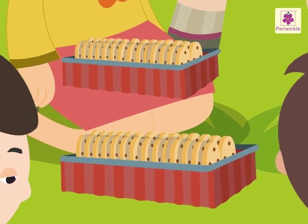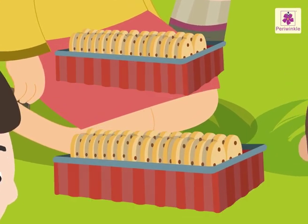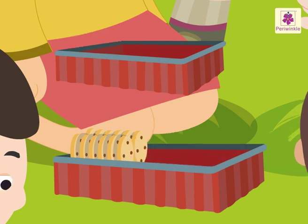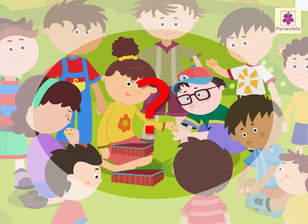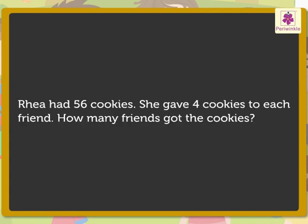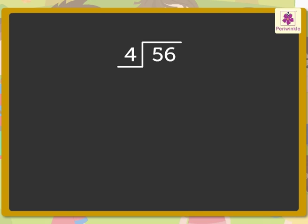Rhea had 56 cookies. She gave four cookies to each friend. How many friends got the cookies? First we read this story. What information does it give? Rhea had 56 cookies. She gave four cookies to each friend. Now let us see what we have to find out. How many friends got the cookies? We have to divide 56 with four to find the answer.